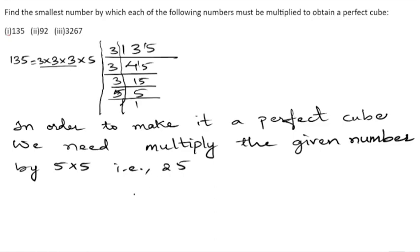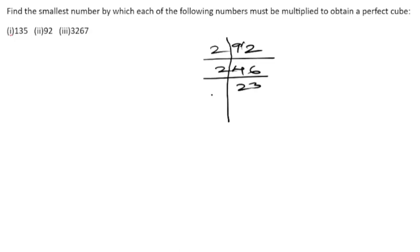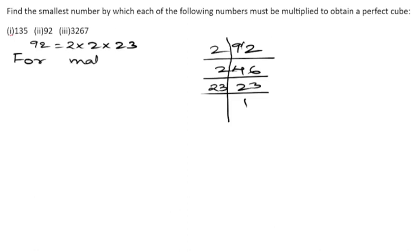Now let us take the second bit. Finding prime factors: 2×46=92, 2×23=46, and 23 is a prime number. So we can see there is a shortage of one 2 and two 23s. We can write the prime factors of 92 as 2 × 2 × 23. For making it a perfect cube...